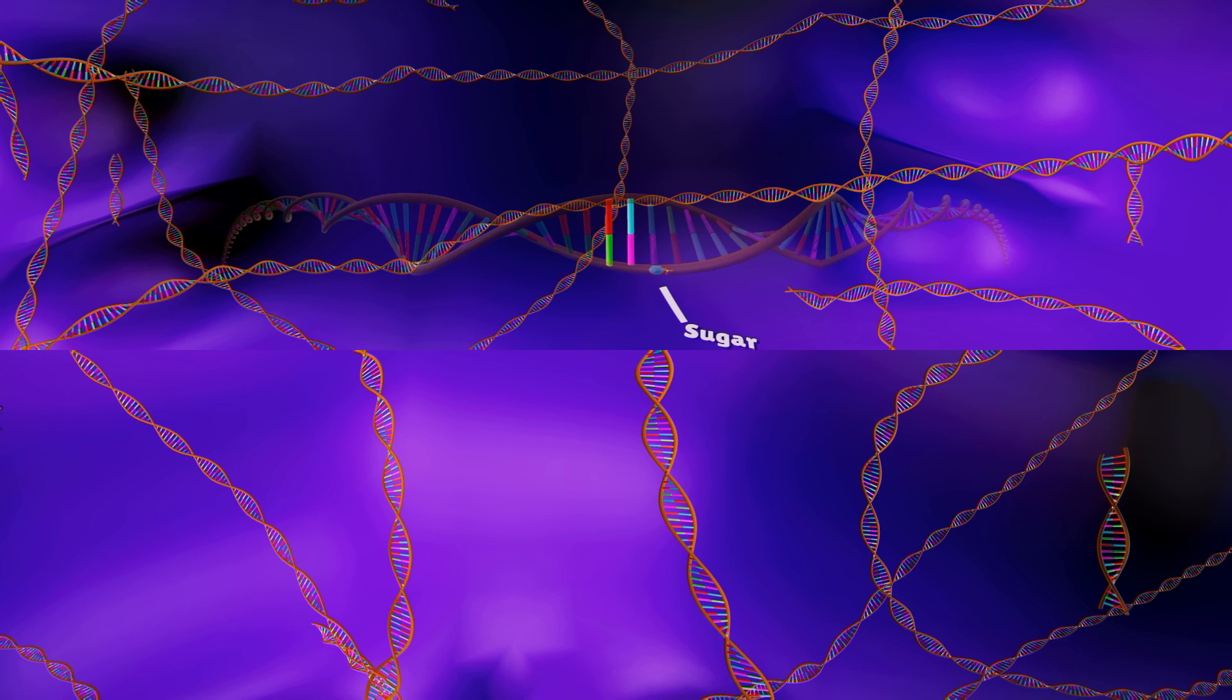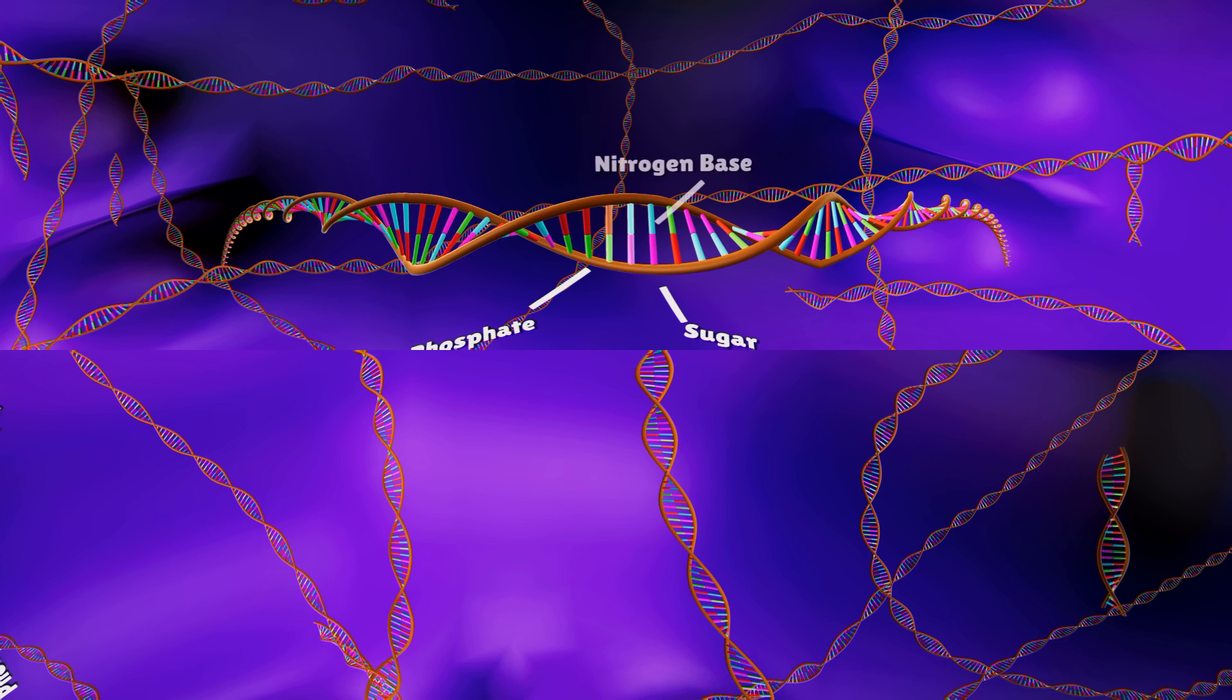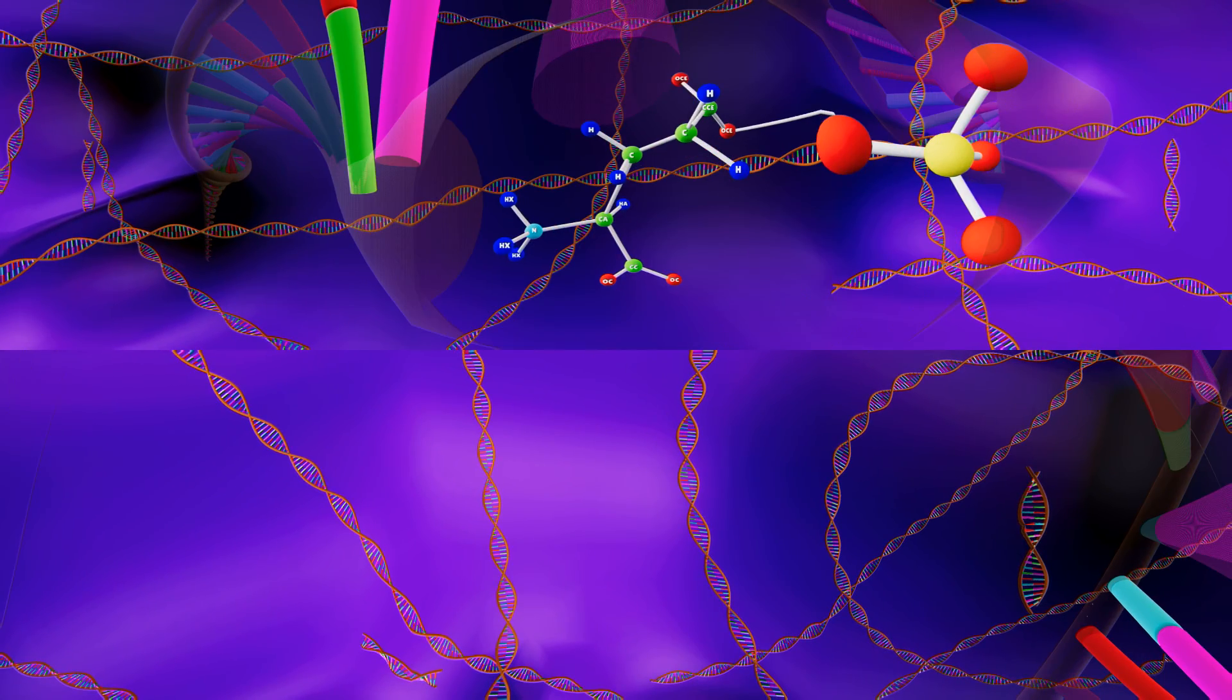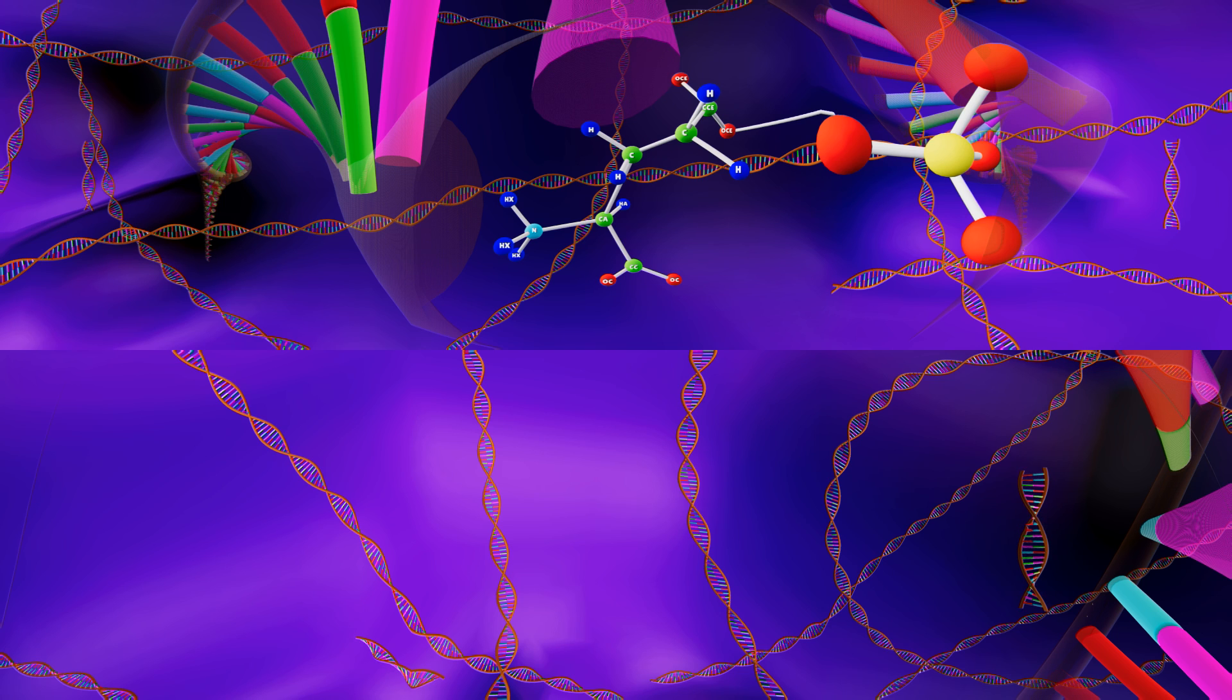A sugar, phosphate groups, and nitrogen bases. The sugar that makes up the backbone of the DNA molecule is called deoxyribose. It is a five-carbon sugar that is interspersed with the phosphate groups, forming a repeating pattern.